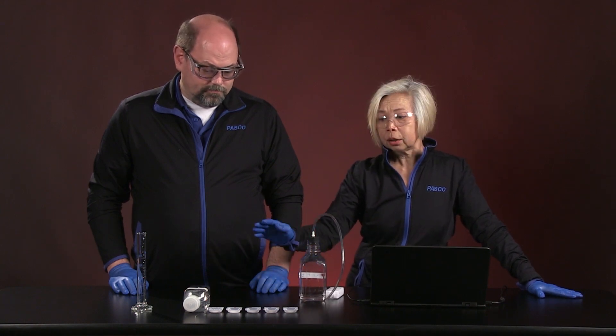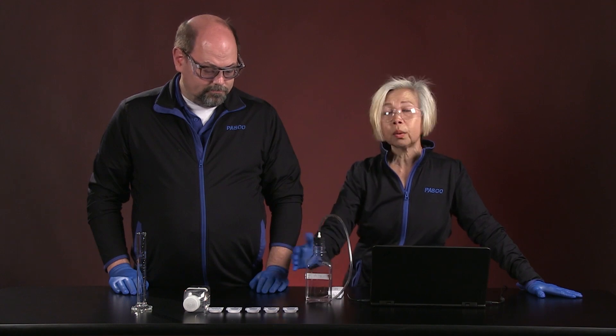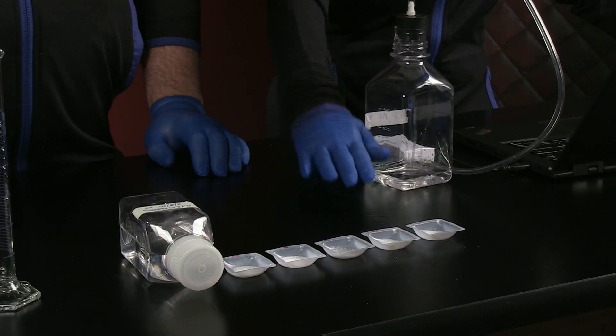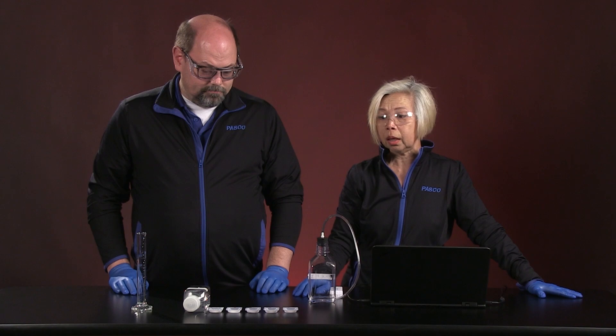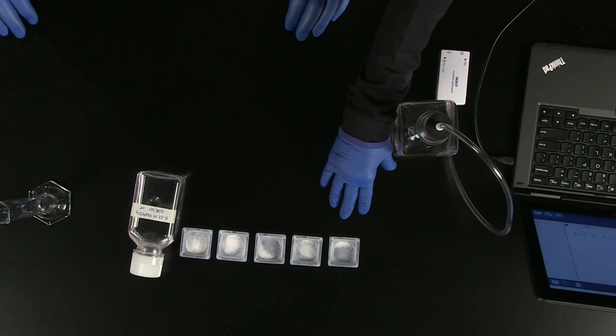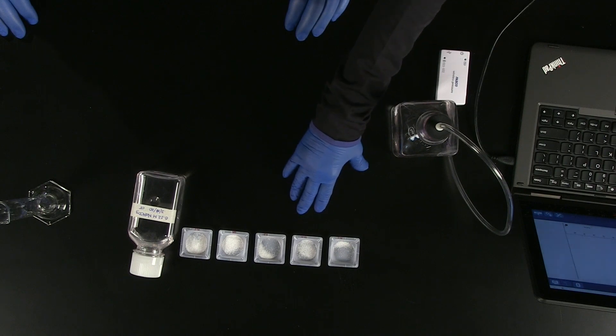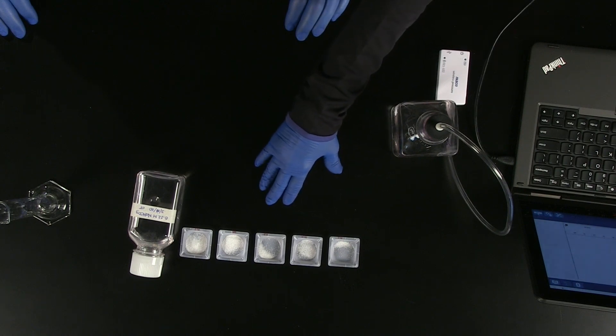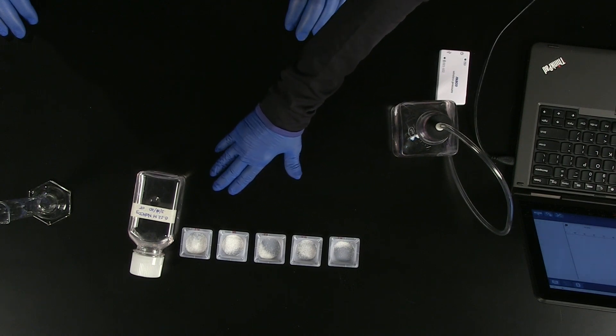We will be adding to each of these runs, we will be adding citric acid. And the citric acid that we have today has been massed at different levels. We have 0.1 gram, 0.2 gram, 0.3, 0.4, and 0.5.